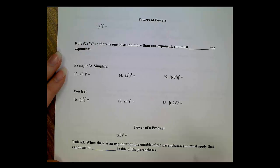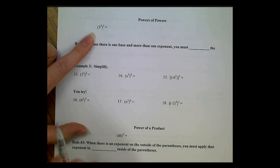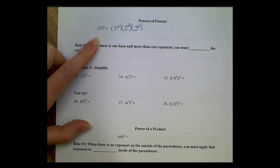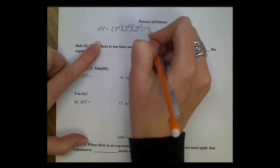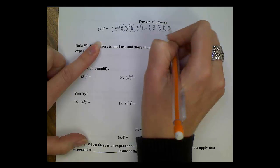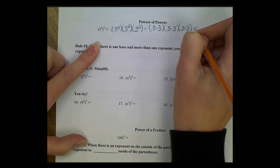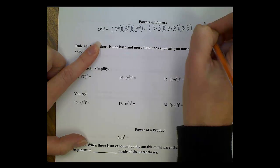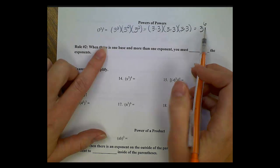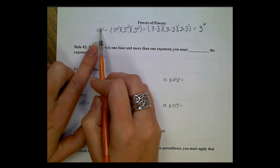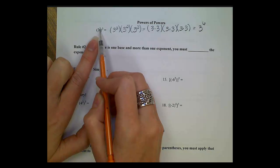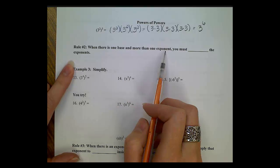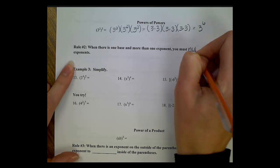Let's move on to our next rule: powers of powers. We're looking at 3 squared, then raised to the 3rd power. This means 3 squared times 3 squared times 3 squared. Writing out each 3 squared as 3 times 3, we get six 3s total, so we can rewrite this as 3 to the 6th power. We started with a 2 and a 3, which turned into a 6 — because 2 times 3 equals 6. That's Rule 2: when there is one base and more than one exponent, you must multiply the exponents.